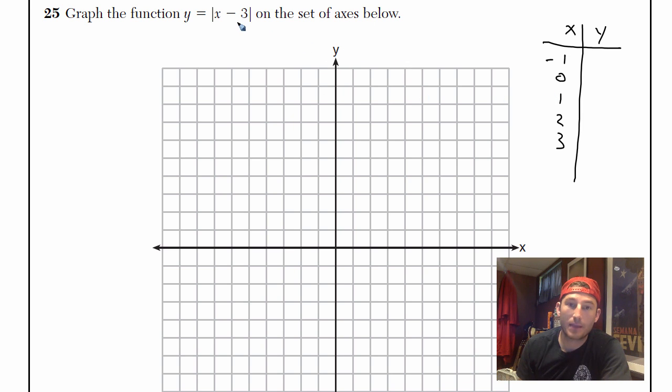x, negative 1 minus 3 is negative 4. 0 just gives you negative 3 back. 1 gives you negative 2. 2 gives you negative 1. And we already see the pattern here. So it looks like it's just going to do that. Let's see what happens at 4. 4 minus 3 is 1. So we're already seeing what's going on here. 5 gives you 2. So it looks like it's going to bounce back up.